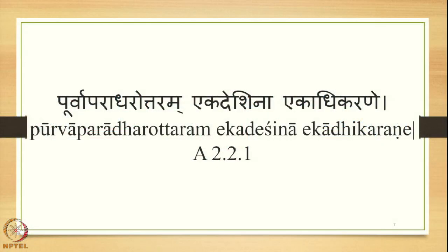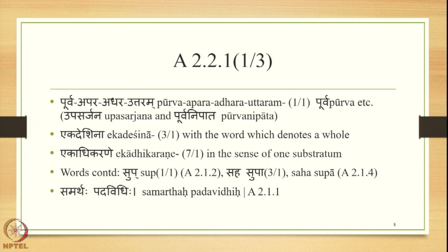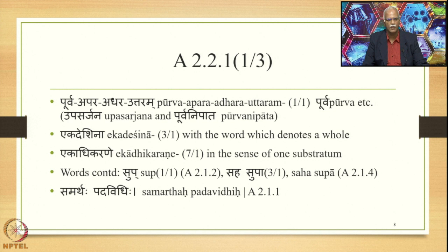The first Sutra in this section has three Padas. The first Pada is Purvaparadharo Ttaram (1.1), referring to the words Purva, Apara, Adhara, and Uttara as Subantas. Because they are mentioned in Prathama by the Sutra 'Purva Prathama Nirdishtam Samasa Upasarjanam,' they will be termed Upasarjanam, and because of 'Upasarjanam Purvam,' they will occupy the initial position of the compound — the Purva Nipatha will take place.